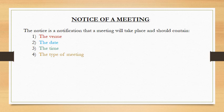The notice should be sent to everybody who is eligible to attend or should attend. So if it's a staff meeting, the notice goes to every single staff member. And if it is a committee meeting, it goes to every committee member. A notice must be sent to everyone who should attend the meeting or who belongs to the organization.